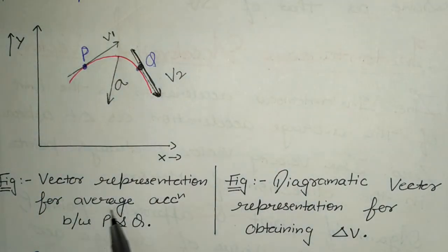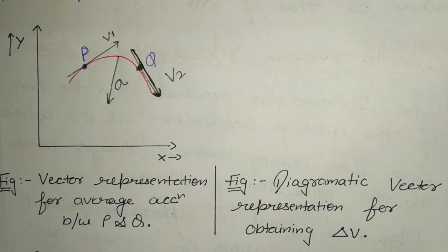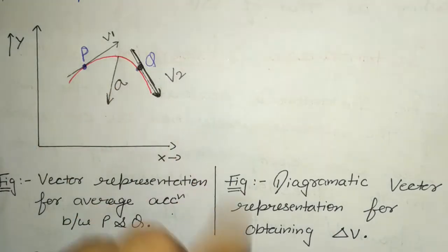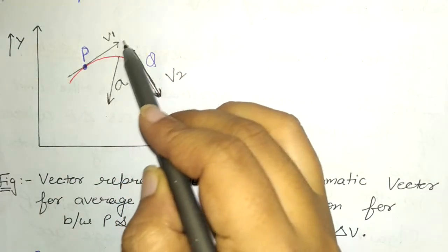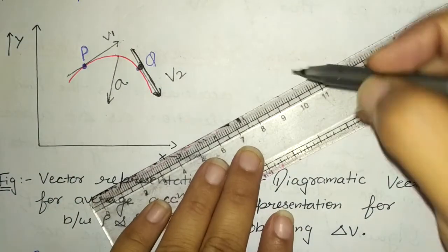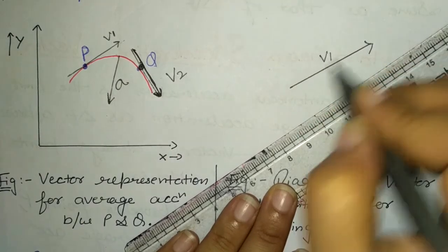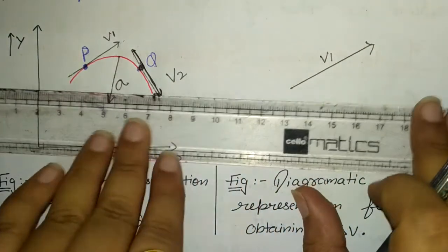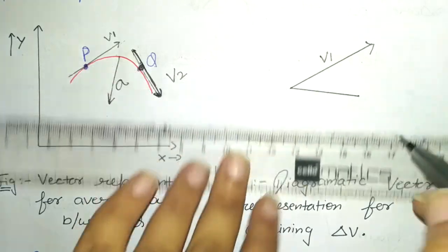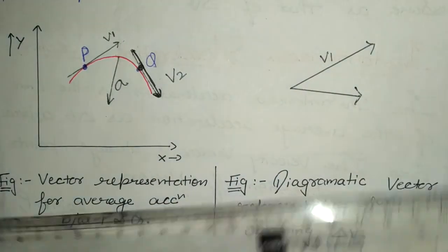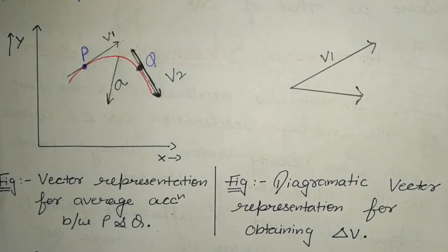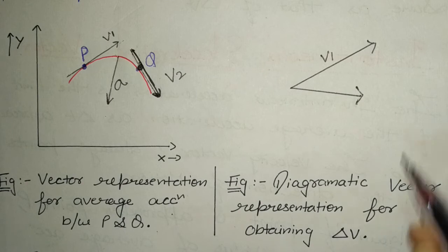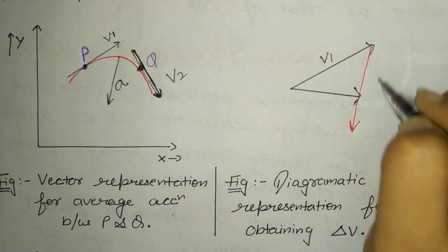This is the vector representation for average acceleration between P and Q. For the diagrammatic representation, we see that V1 is inclined in the upward direction, representing the velocity V1. V2 is inclined in another direction. Using the triangle law of vector addition and parallelogram law of vector addition, the third direction — which is inward — is the direction of acceleration.